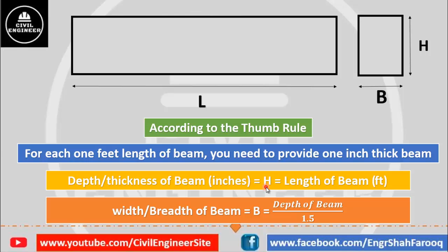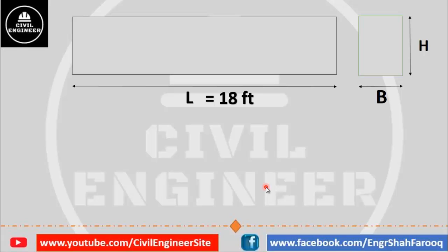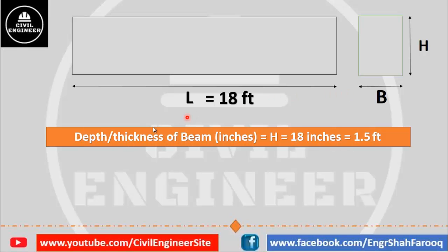Now let's discuss a practical example. Suppose we have a beam with a length of 18 feet, and we need to select the height and width. According to the thumb rule, depth or thickness of the beam in inches equals the length of the beam in feet, which is 18 feet. So the depth of the beam is 18 inches. To convert to feet, divide by 12, giving a height of 1.5 feet.